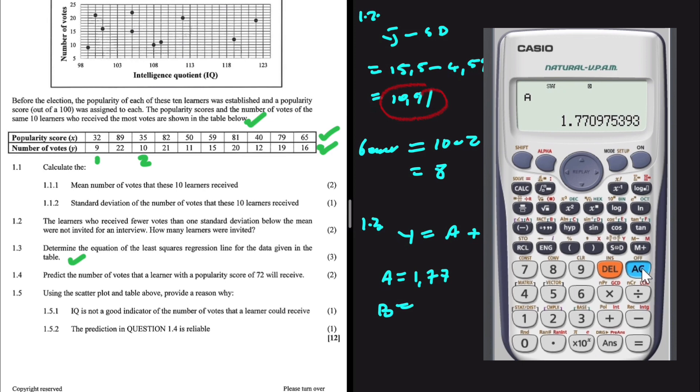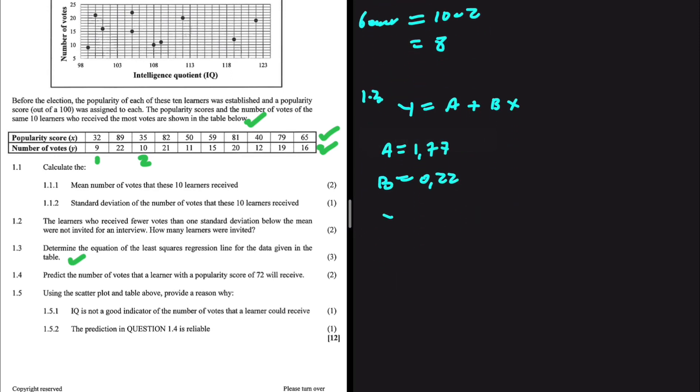So if I want to find B, then it is AC, shift 1, 5, and then I'm looking for B now. That is option 2. This is equals to 0.22. So B is equals to 0.22. Y is equals to 1.77 plus 0.22x. There we go. We have the equation of the least squares regression line.